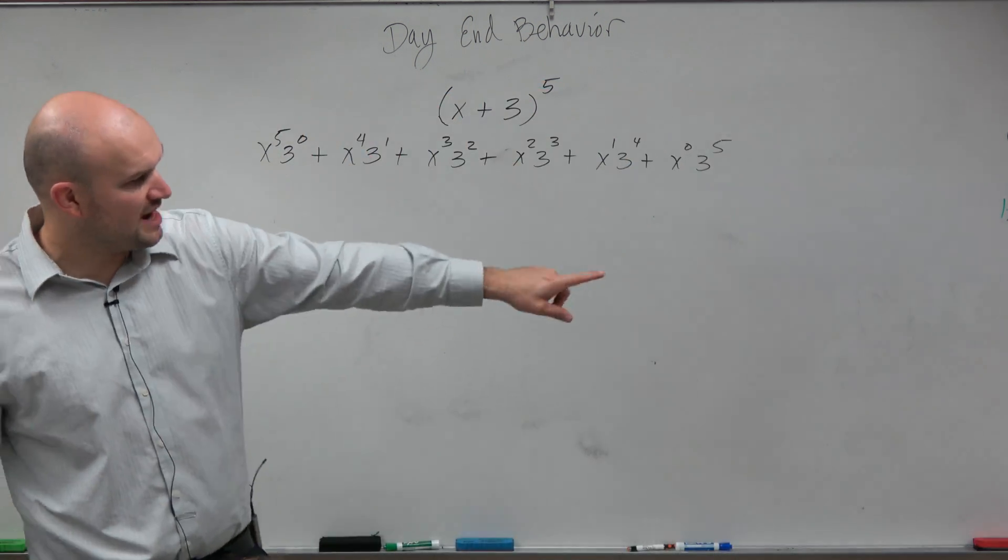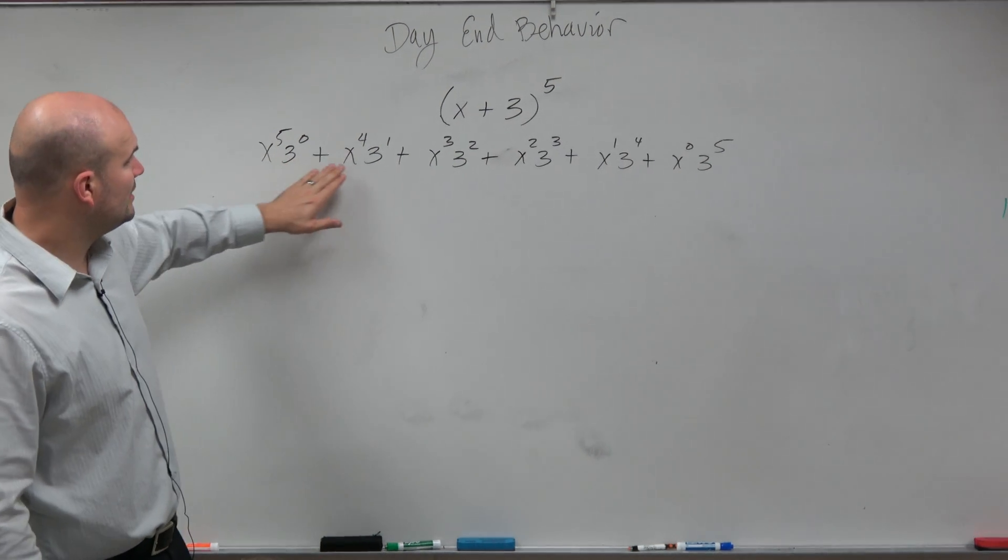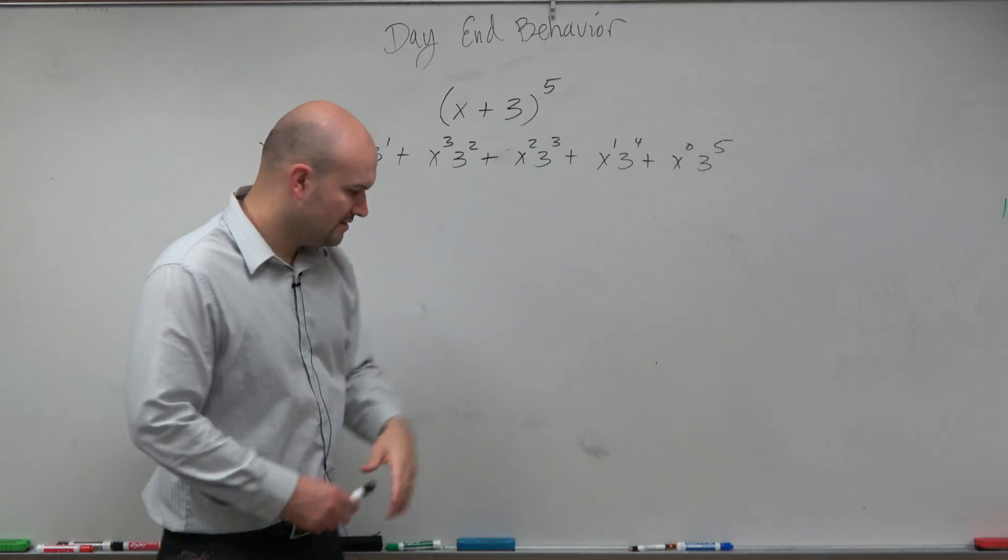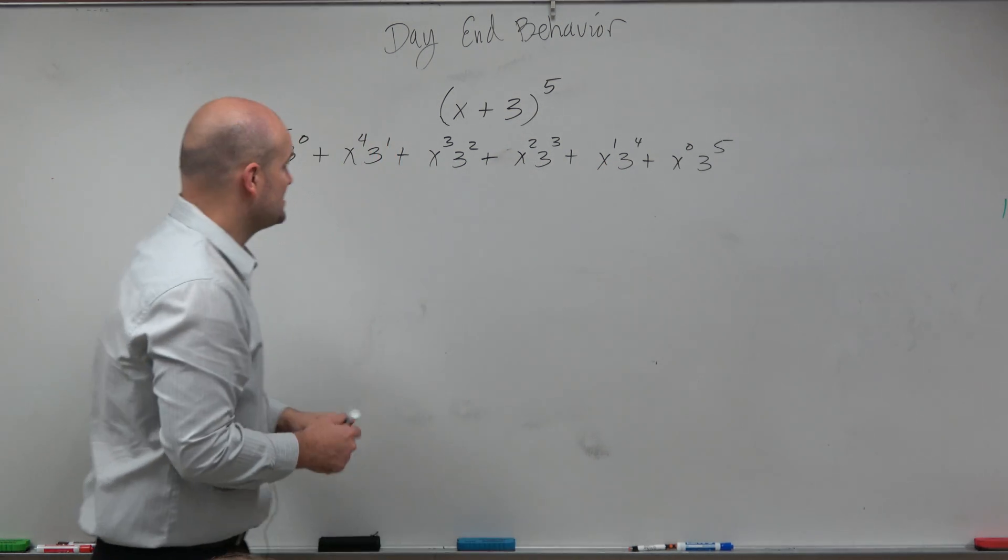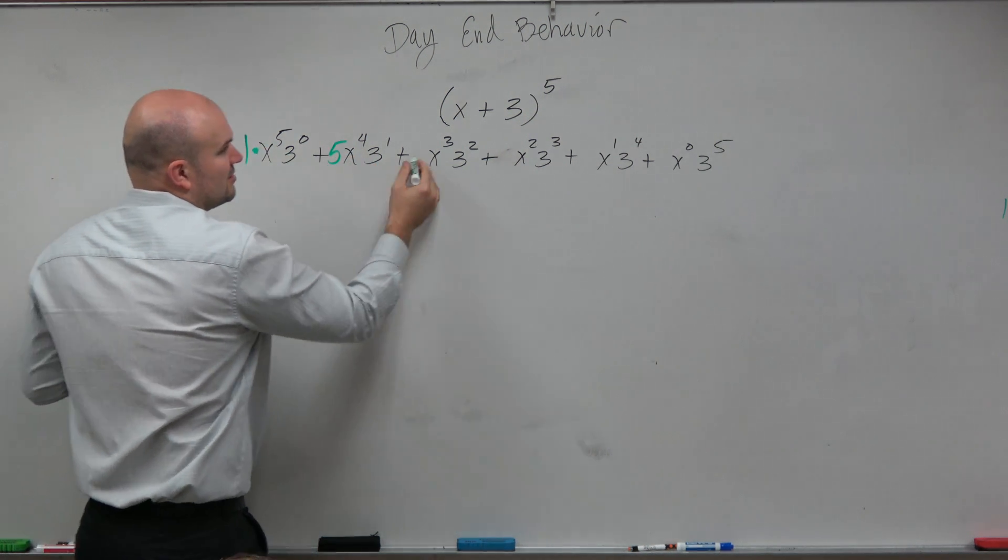Now, notice how many numbers I have, 1, 2, 3, 4, 5, 6. I should have six terms then, 1, 2, 3, 4, 5, 6. OK, good. So then, each number from the Pascal's triangle has to be a product times each one of these terms.